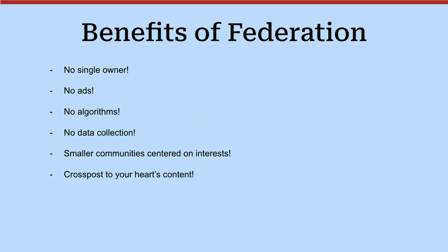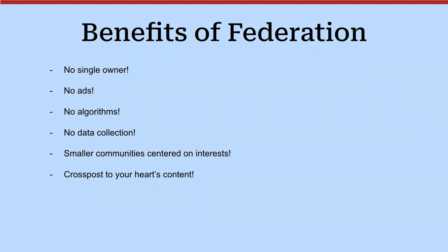You can cross-post to your heart's content. You create your account in one place and then connect it to other services. You can share a text post on what would be like an Instagram or a YouTube. You can share a blog. You hit publish once and it publishes to all these places so you can reach a different audience across different platforms, because not everybody might be on Mastodon.